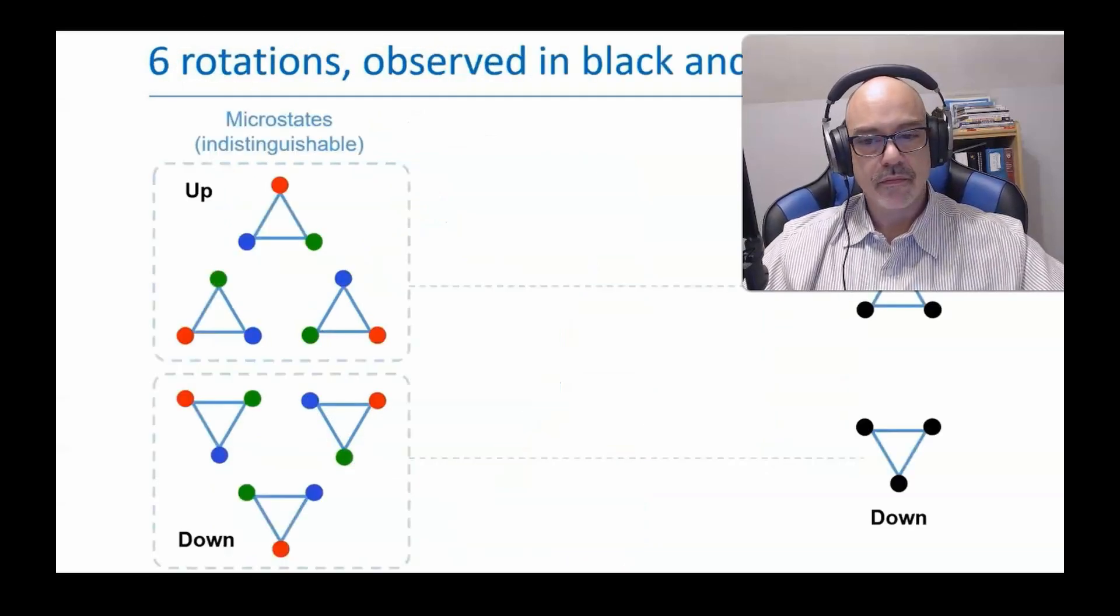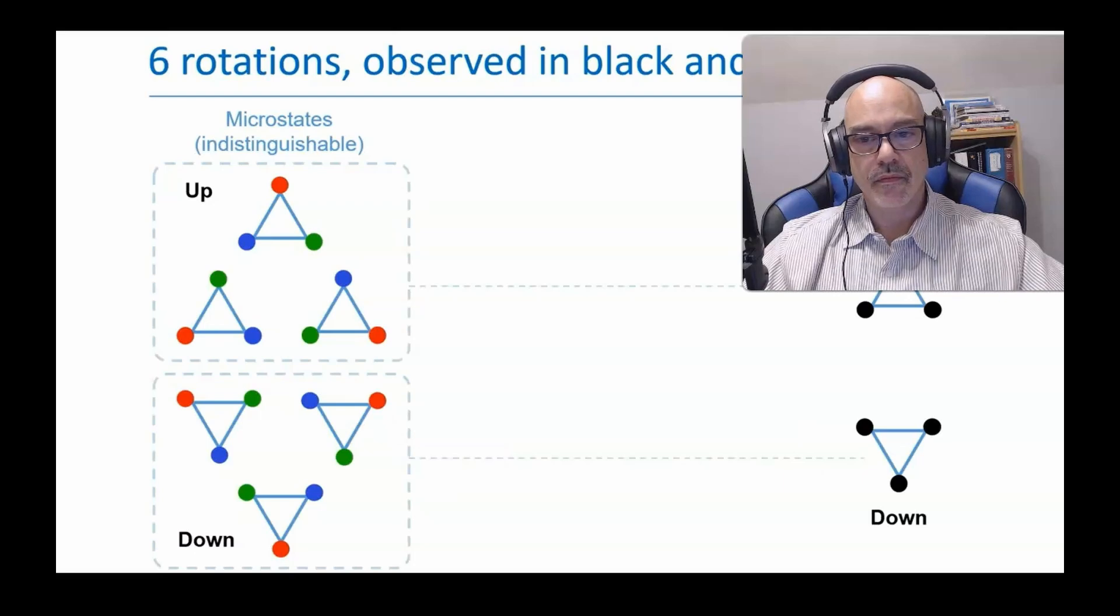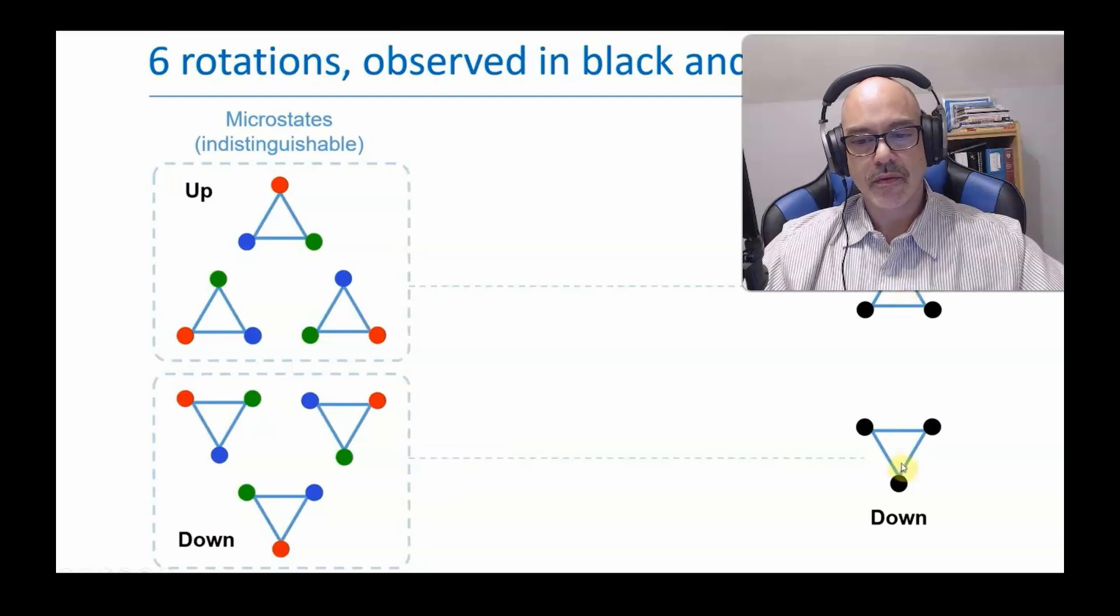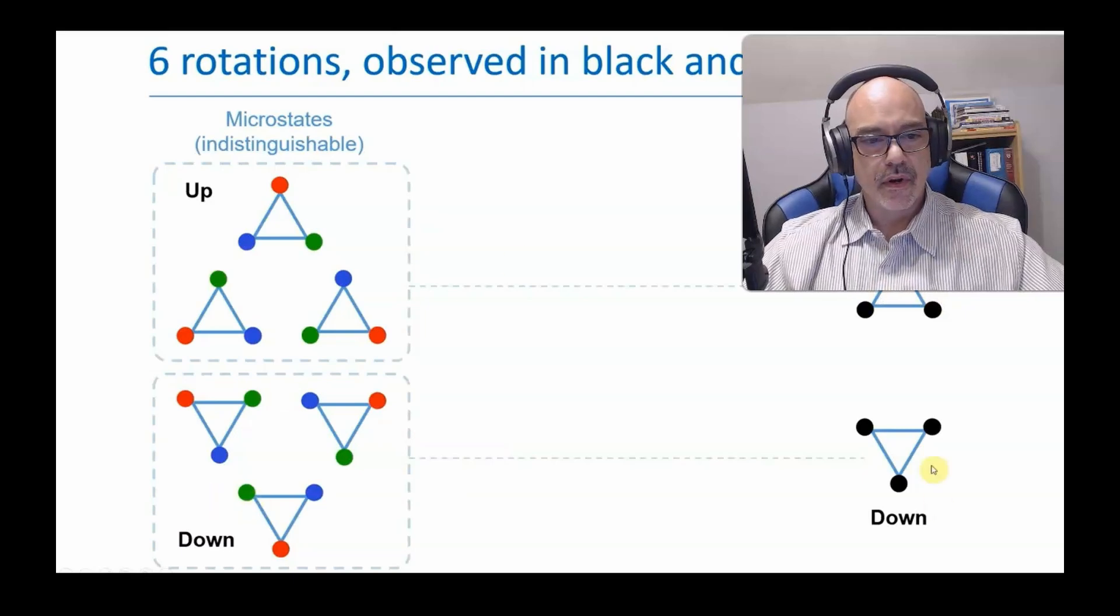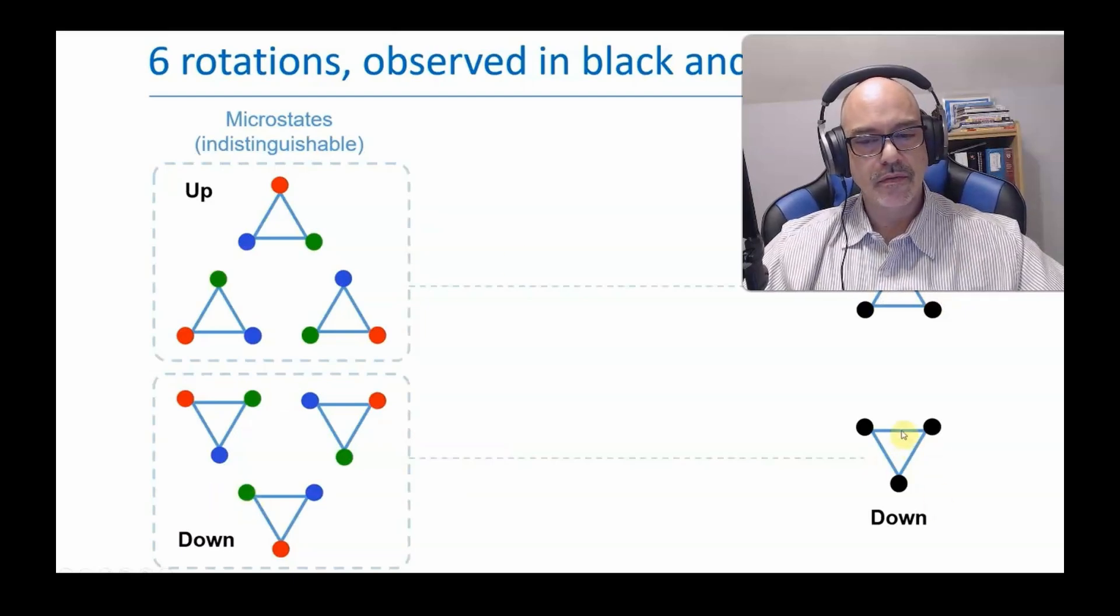What happens when this new state space is observed in black and white? In this case, the observer cannot distinguish colors, but can distinguish vertex up from vertex down. In other words, the state space is partitioned into two subsets, and each subset constitutes a different macro state or a different observable state. An observer is able to perceive which macro state the object is in currently.